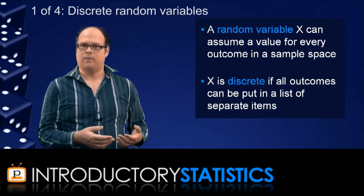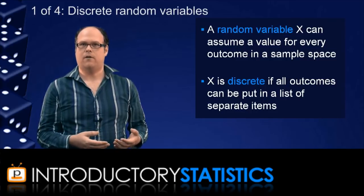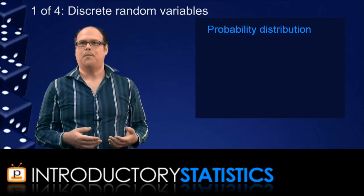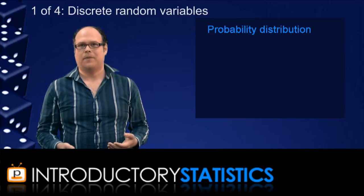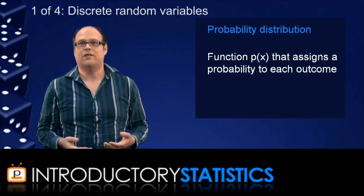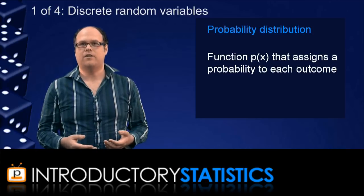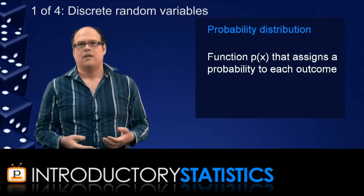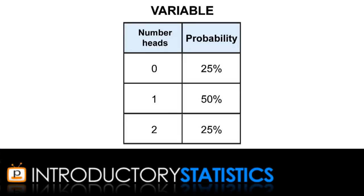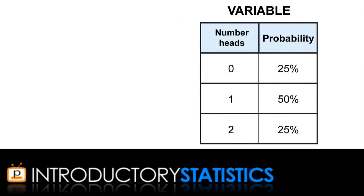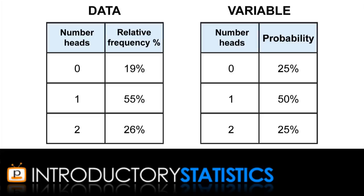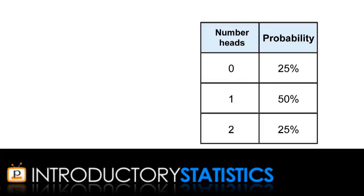Now, when we just assigned the three probabilities to those three outcomes for the coin experiment, what we were doing was assigning a probability distribution. A probability distribution is a function that assigns a probability to each and every outcome for a discrete random variable. So again, here is the probability distribution for the variable underlying the coin flip experiment. Notice that it looks a lot like the relative frequency table that came about when we collected 100 data values. The difference is that the relative frequency table will vary from sample to sample. The probability distribution tells us about the fixed nature of the underlying variable.